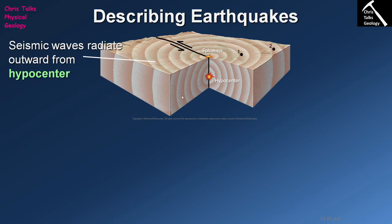Once the earthquake occurs, energy which has been stored up in these two blocks of rock is released as mechanical energy, causing the ground to vibrate. These vibrations are the result of seismic waves, and these seismic waves are going to emanate out in all directions from the hypocenter — to the sides as well.